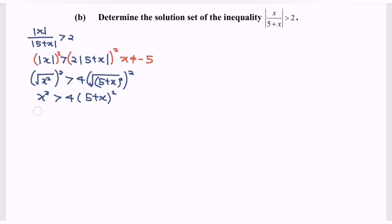We expand the situation. So x squared greater than 4 bracket 25 plus 10x plus x squared. We expand the situation. So x squared greater than 100 plus 40x plus 4x squared.